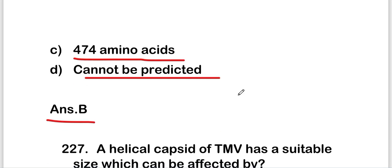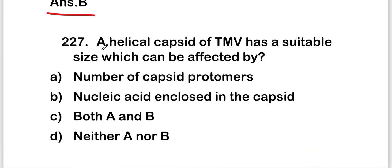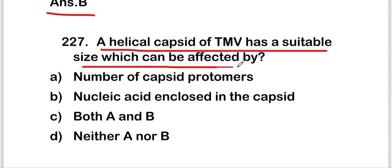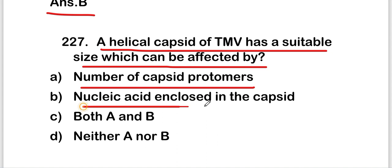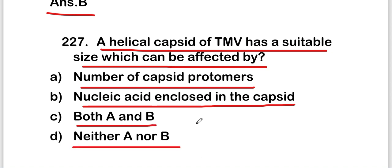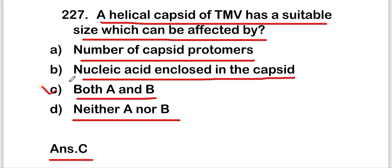The next question: a helical capsid of TMV (tobacco mosaic virus) has a suitable size which can be affected by — number of capsid protomers, nucleic acid enclosed in the capsid, both A and B, or neither A nor B? The right answer is option C — both A and B. The helical capsid of TMV has a size affected by both the number of capsid protomers and the nucleic acid enclosed.